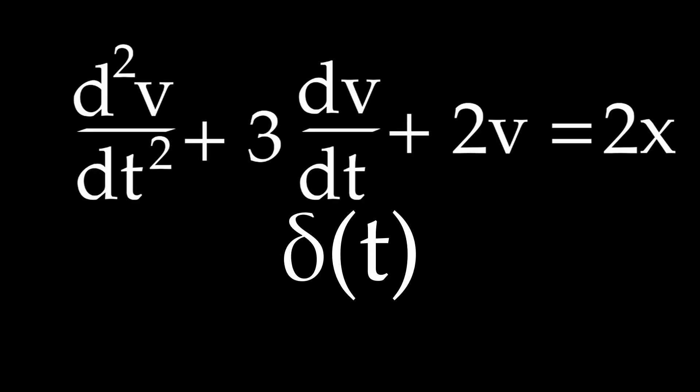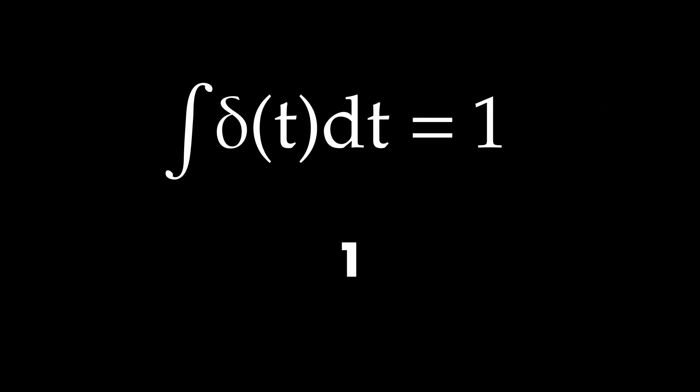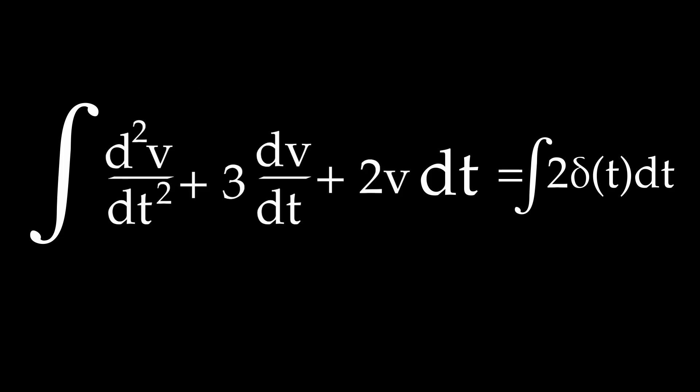For this, we have to go back to our original equation with the delta function. Now, our trick is to use the fact that the integral of the delta function is 1. So let's take the integral on both sides from minus epsilon to epsilon, and make epsilon really small. On the right hand side, you'll of course get the 2.